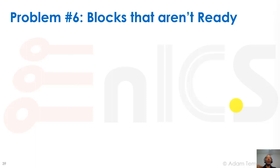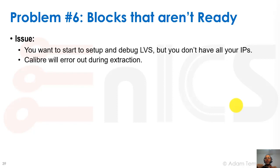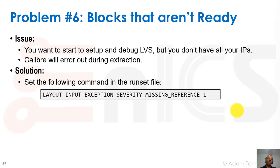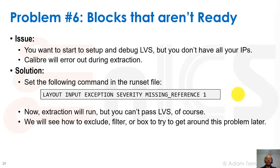Problem number six: blocks that aren't ready. You want to set up and debug LVS as early as possible because it may take a long time and gates our tapeout. But not all IPs are ready, and if we try to extract without all GDS files merged in, we'll get an error. The workaround is to put 'layout input exception severity missing reference one' in our run file, which reduces the missing reference to a warning and allows extraction to continue. It of course can't pass LVS, but at least extraction will run and we can see ERC problems, and use exclude filter or box to work around this.